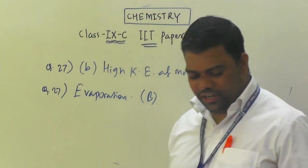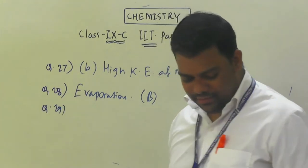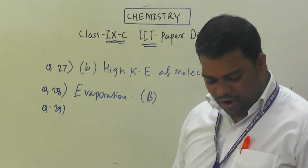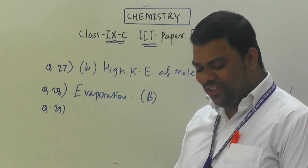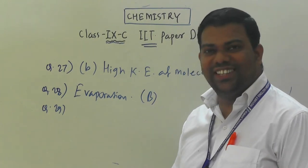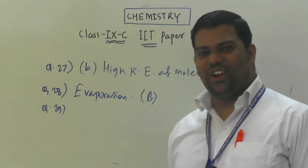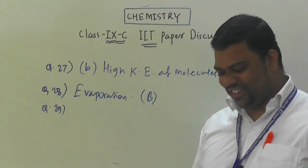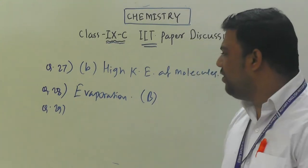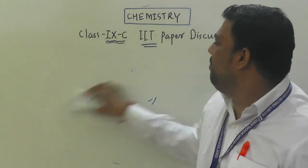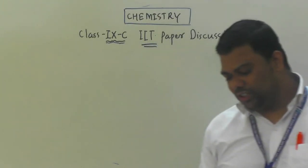Question number 29: the electric bulb on long use forms a black coating on its surface — what process is associated with this? Obviously, tungsten metal sublimates — solid is converted into gaseous. So the option is sublimation of tungsten. Question number 29, option B: sublimation of tungsten.